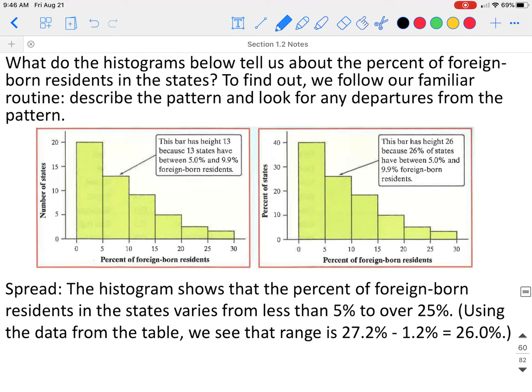If we look at the spread, the histogram shows that the percent of foreign born residents in the states vary from less than 5% to over 25%. You cannot actually give an exact spread or exact range if you're only looking at the histogram. If we do look at the data on the table, we can see that the range goes from 27.2 to 1.2, which is a 26% range.